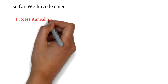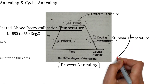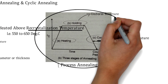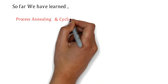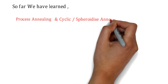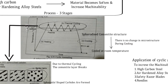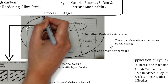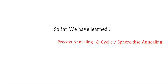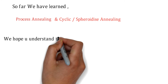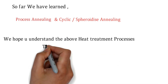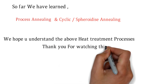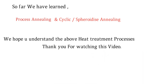So far we have learned two processes: process annealing, which has three stages as shown, and cyclic annealing — also called spheroidizing — which involves heating, thermal cycling, and cooling. We hope you understood these heat treatment processes. Thank you for watching, please subscribe to the channel.